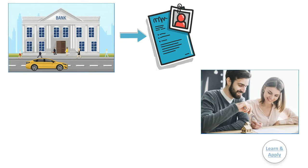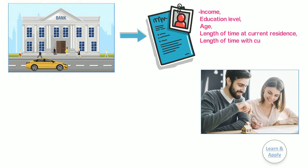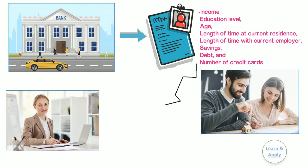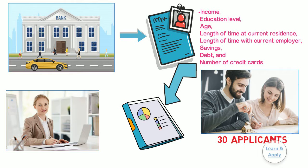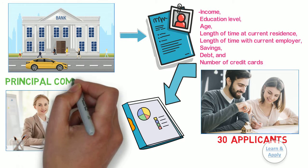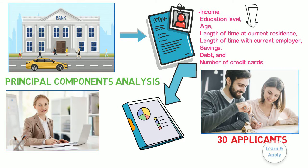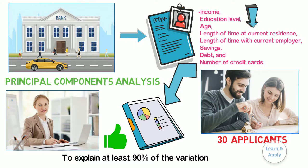For example, a bank requires 8 sections of information from loan applicants like income, education level, age, length of time at current residence, length of time with current employer, savings, debt, and number of credit cards. A bank administrator wants to analyze this data to determine the best way to group and report it. The administrator collects this information for 30 loan applicants and performs a principal component analysis to reduce the number of variables to make the data easier to analyze. The administrator wants components to explain at least 90% of the variation in the data.